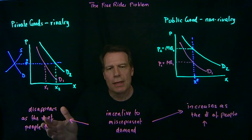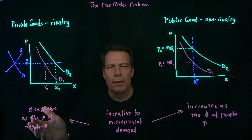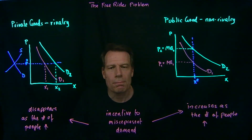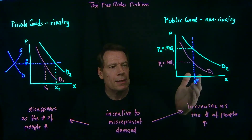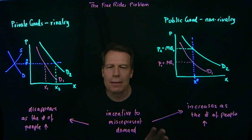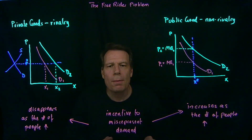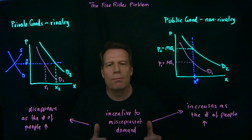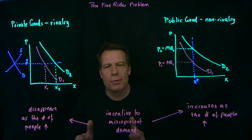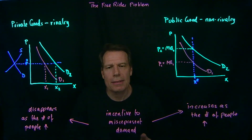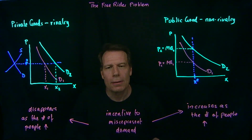So in the private goods setting, when we have lots of people in markets, there's no problem with an incentive to misrepresent your demand to get a better price — you simply can't. But in the analogous public goods case, where we're trying to figure out the right prices to charge each person, that incentive increases the more people enjoy that public good. Each person ends up wanting to free ride on what everybody else is saying, and gets charged a low price by misrepresenting how much they would like to demand that good.